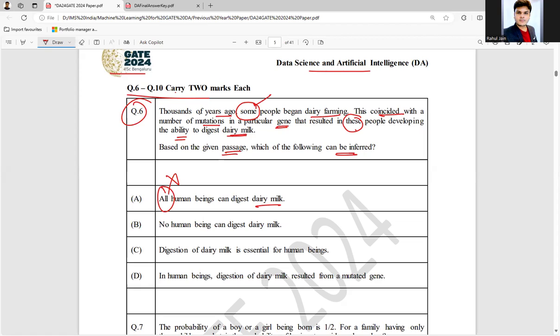Option B: No human being can digest dairy milk. Incorrect. Some humans are there, so this can't be right. Option C: Digestion of dairy milk is essential for human beings. Out of context. How can we say that?